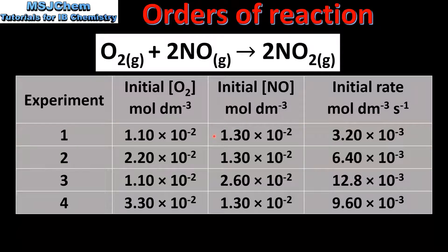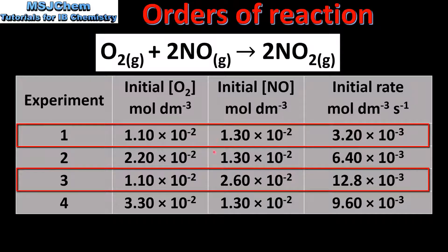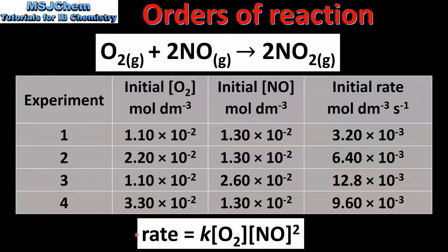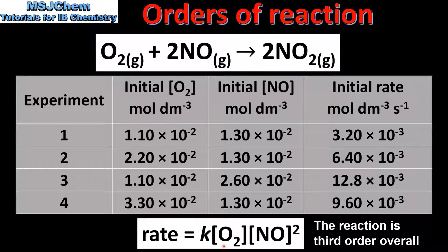Next we look at the nitrogen monoxide. If we compare experiments 1 and 3 we can see that the concentration of nitrogen monoxide has doubled whereas the concentration of oxygen remains constant. If we compare the initial rate we can see that it has increased by a factor of 4. So when the concentration of nitrogen monoxide is doubled the rate increases by a factor of 4 — therefore the reaction is second order with respect to nitrogen monoxide. From this data we have determined that the reaction is first order with respect to oxygen and second order with respect to nitrogen monoxide.